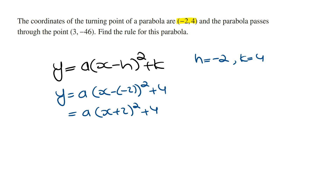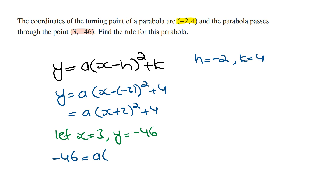Now we need to work out the value of a, and to do this we're going to use the coordinates of the other point, which is the point three, minus forty-six. This basically means that when x is equal to three, y is equal to minus forty-six. So if we let x equal three and y equal minus forty-six and sub this into the general rule, we can solve for the value of a. We're going to get minus forty-six is equal to a times x plus two — so this is going to be three plus two — all squared, and then plus four.